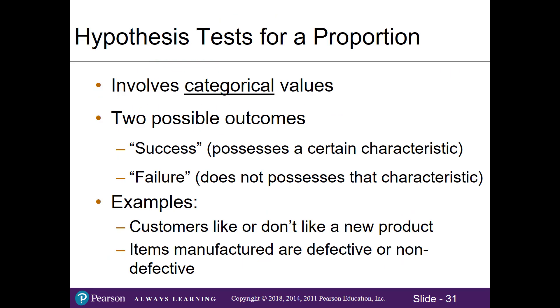When do we use a hypothesis test for a proportion? Proportions involve categorical values. Think categories or words where we have two possible outcomes: a success, which simply means it has the characteristic of interest, or failure, it does not have that characteristic.